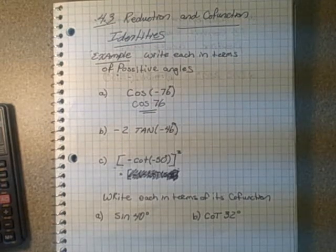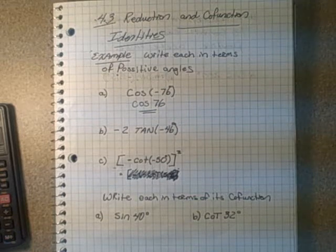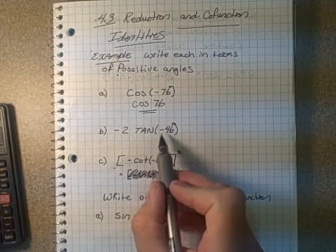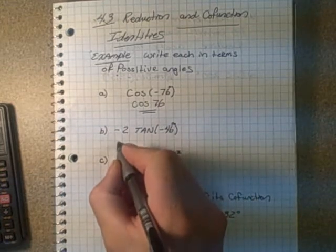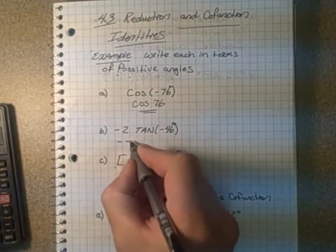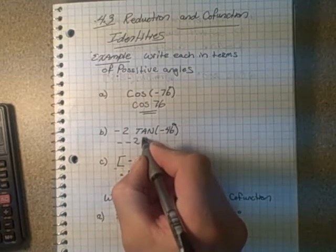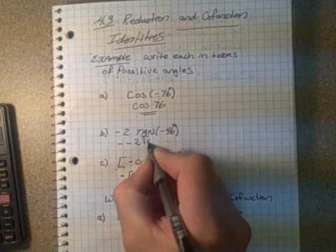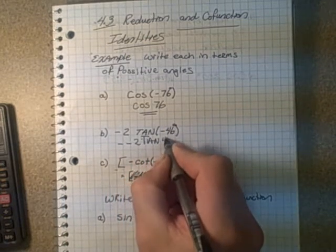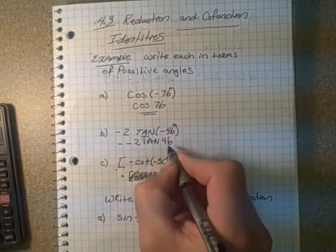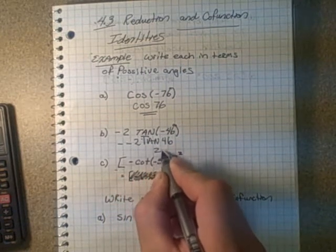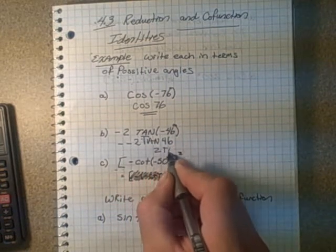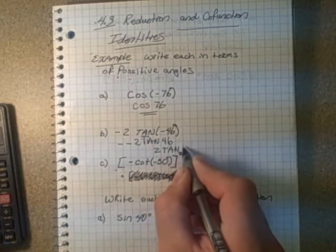Now we have one for tangent. The tangent of a negative angle is actually the negative tan of the positive angle, so you have to take the negative out. This would be negative times negative 2 tan of 46 if we change that to a positive. Two negatives means positive, so that would be 2 tan of 46.